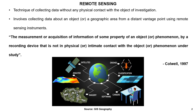Remote sensing is the technique of collecting data without any physical contact with the object of investigation. It involves collecting data about an object or geographic area from a distant point using a remote sensing instrument. From the satellite we record some information, transmit it back to earth, and then do analysis using specific software to extract information. The highlighted point is the actual definition of remote sensing.